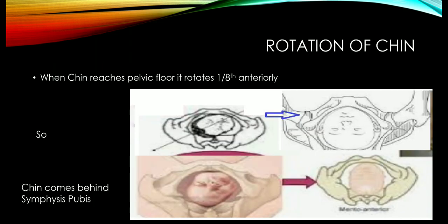An important point in face presentation: when the chin reaches the pelvic floor, it rotates anteriorly — one-eighth rotation anteriorly. You can see in the figure that they are in an oblique direction, and then rotate anteriorly. What happens is that the chin comes behind the symphysis pubis.